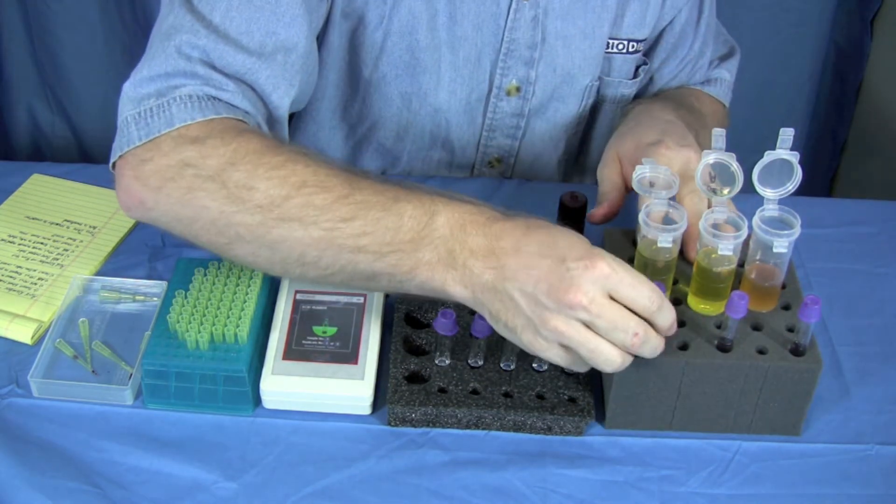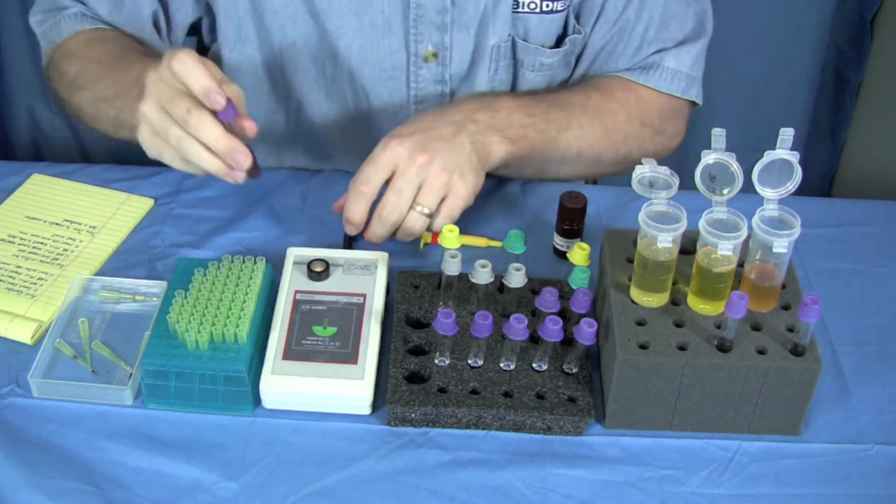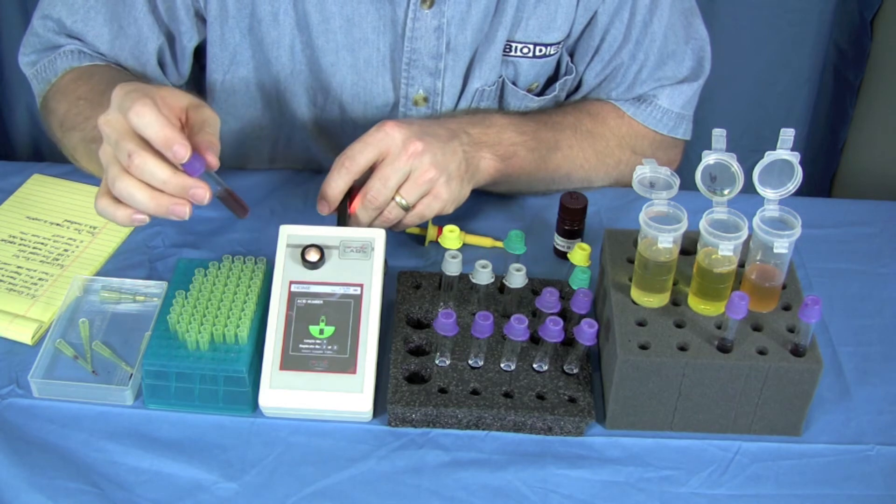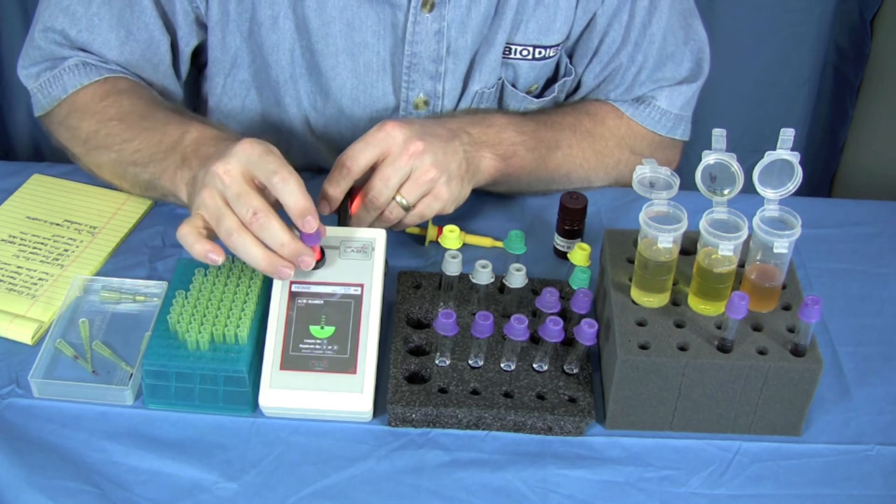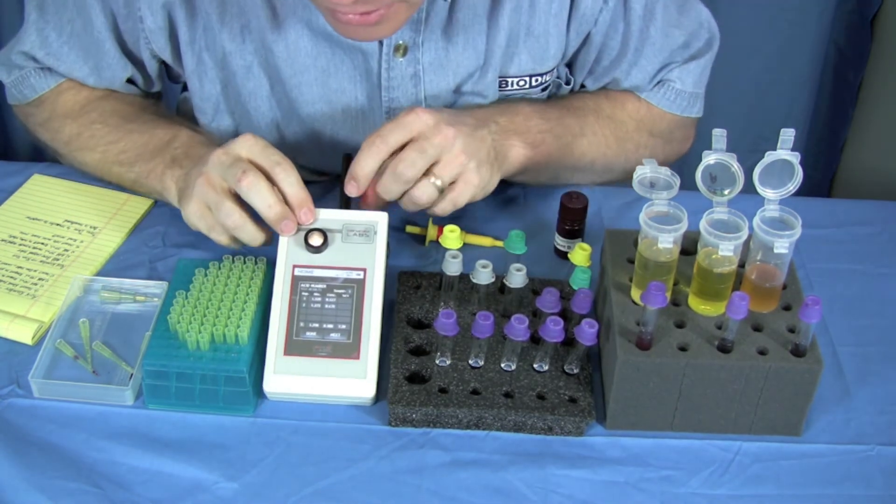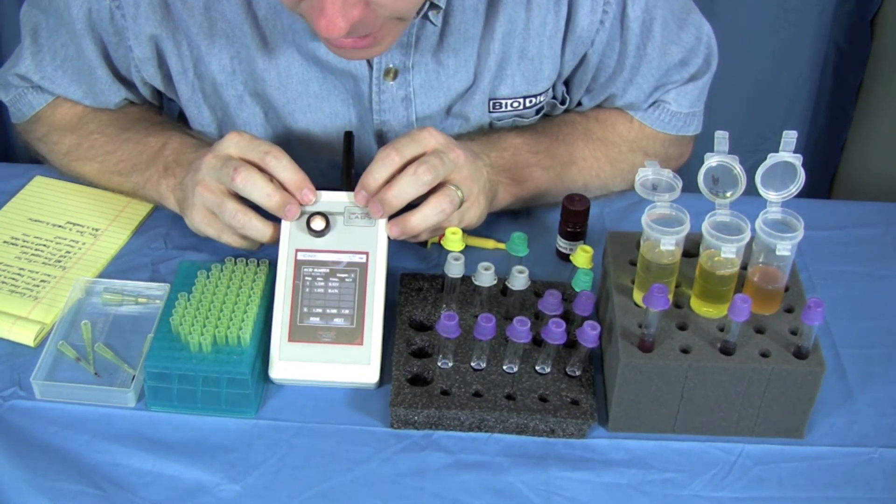We'll test our oil sample B first. Shake these fairly vigorously. Put it into the machine, it's all ready to test. Pull that out. It's going to ask us to put it in twice. Its acid number was 0.5.